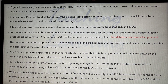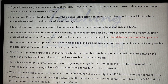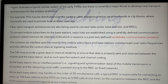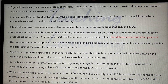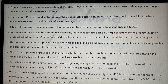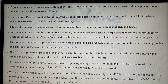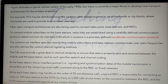The figure illustrates a typical cellular system from the 1990s. However, there is currently a major thrust to develop new transport architectures for wireless end-users. For example, PCS may be distributed over the existing cable television plant to neighborhoods or city blocks, where microcells are used to provide local wireless coverage.